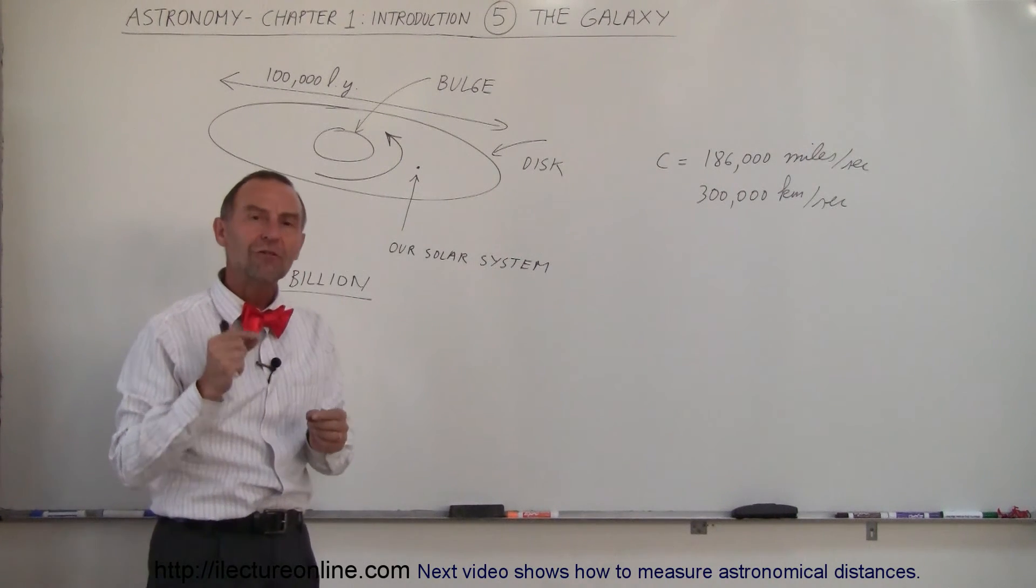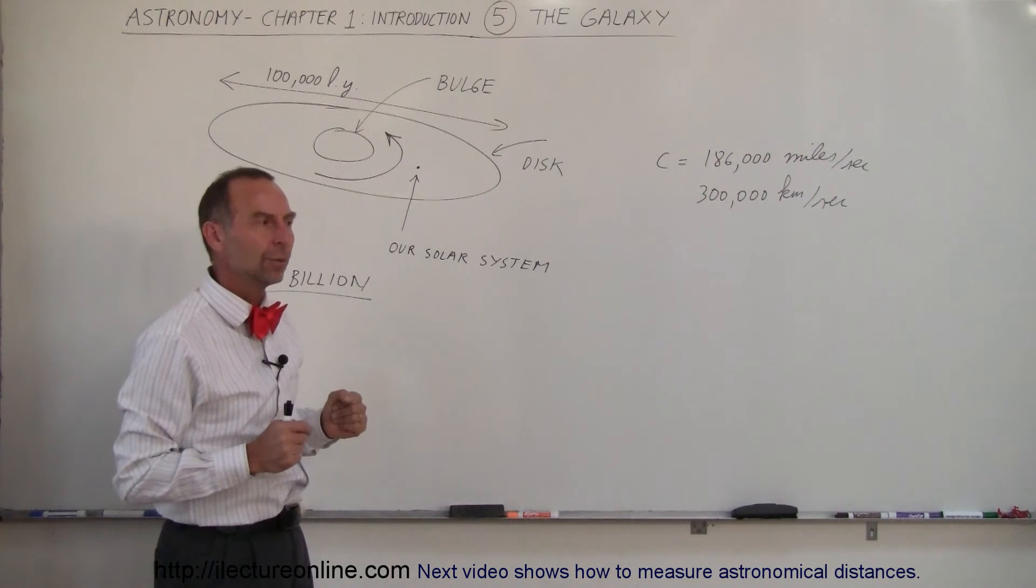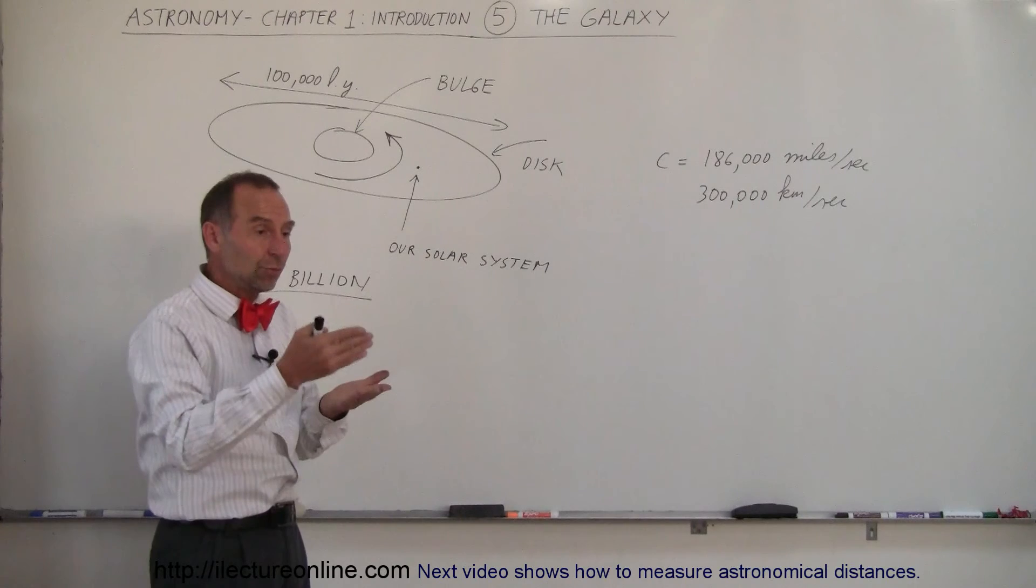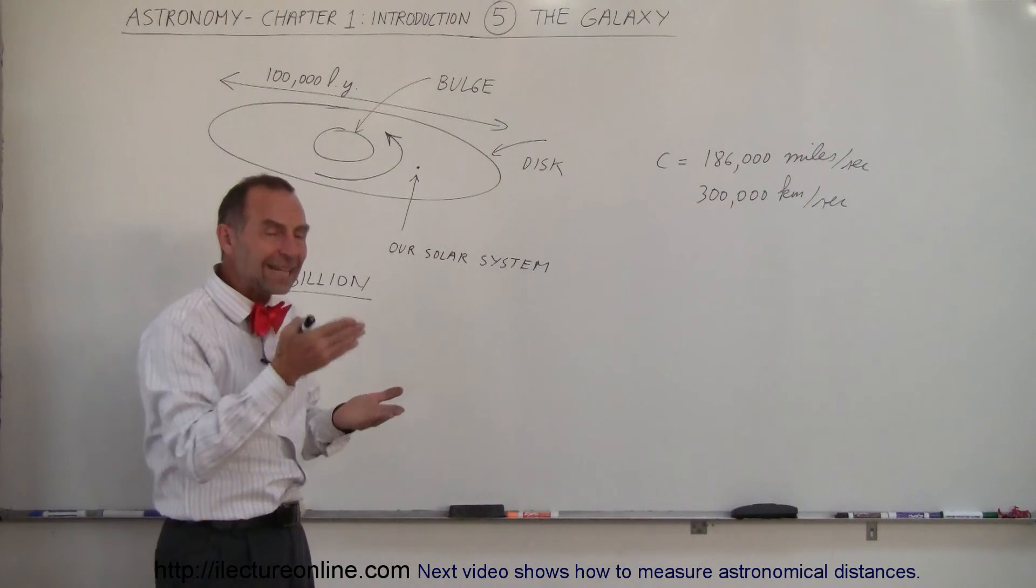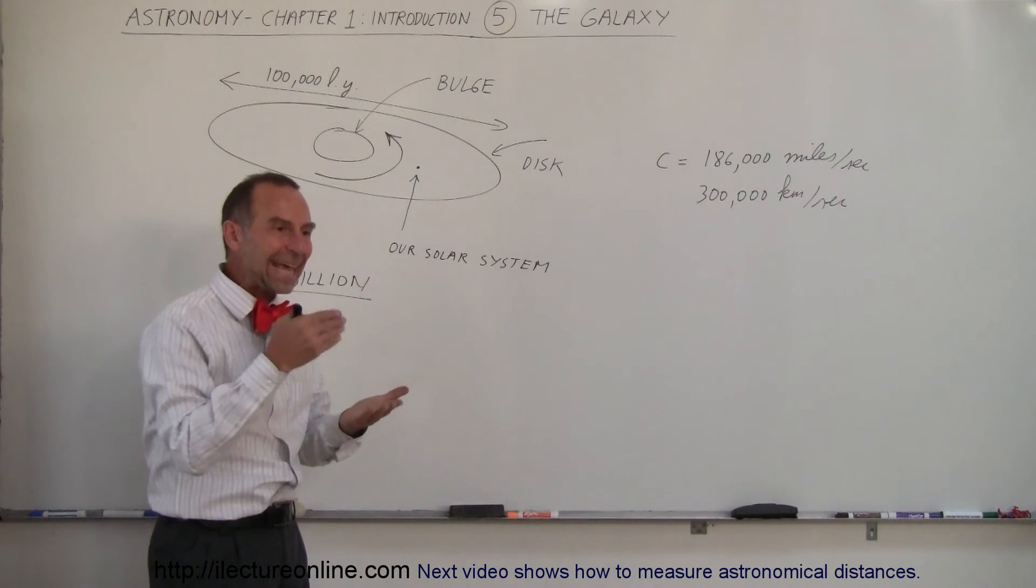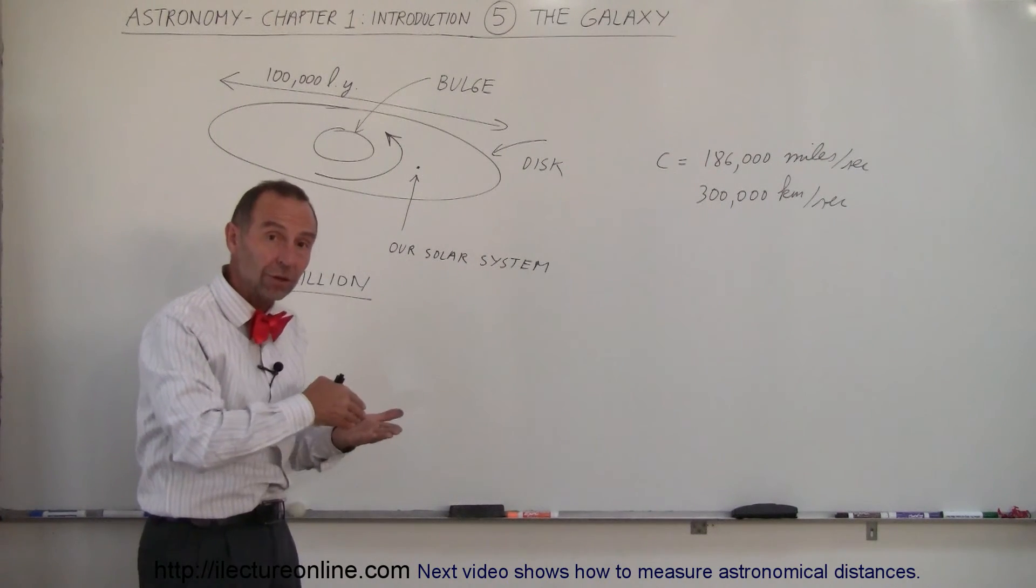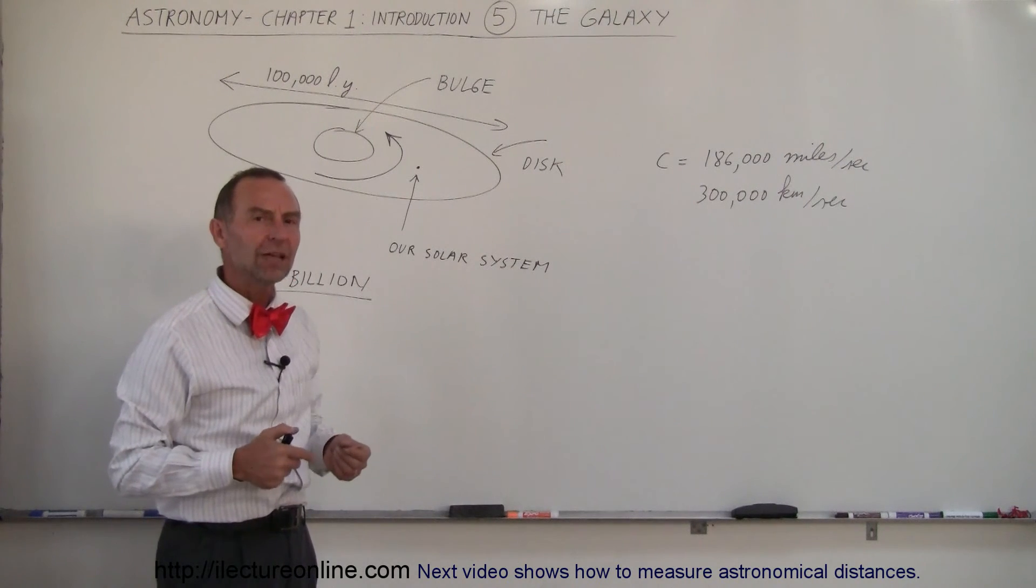At that speed, imagine how far light could travel in an entire year. Wow! Just think, if it could travel from here to the Moon in just over a second, and there's 86,400 seconds in a day, light could travel 86,400 times the distance between the Earth and the Moon. That is just absolutely amazing.